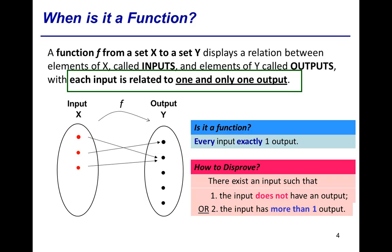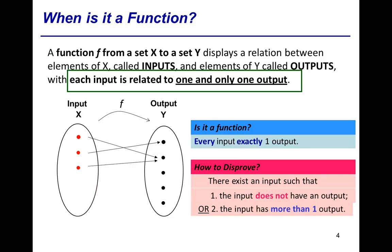or an input that has more than one output. For example, if we take away one arrow, then that input would have no arrow pointing out of it, and the relation is not a function. A second counter-example would be adding one more arrow to an input, giving it two arrows pointing out — then this relation is also not a function.